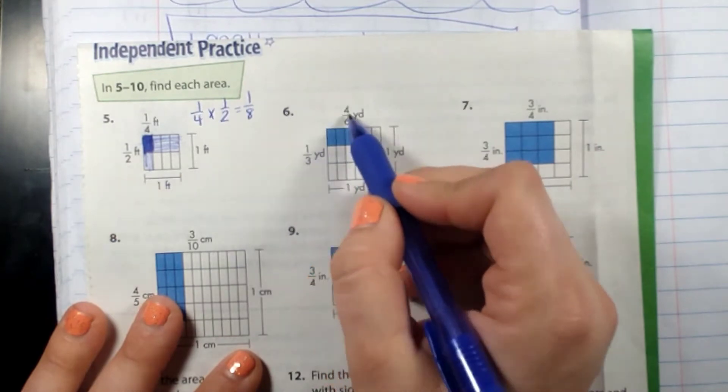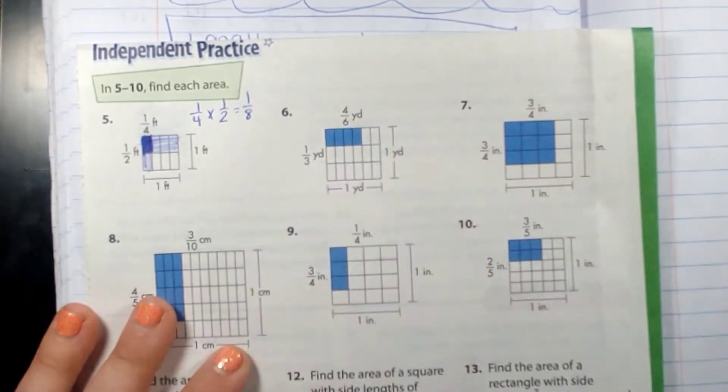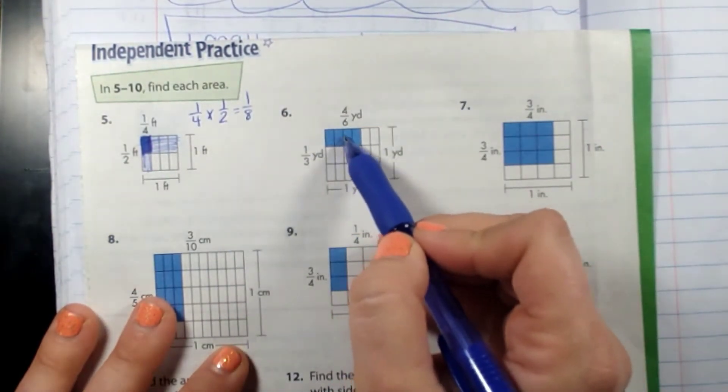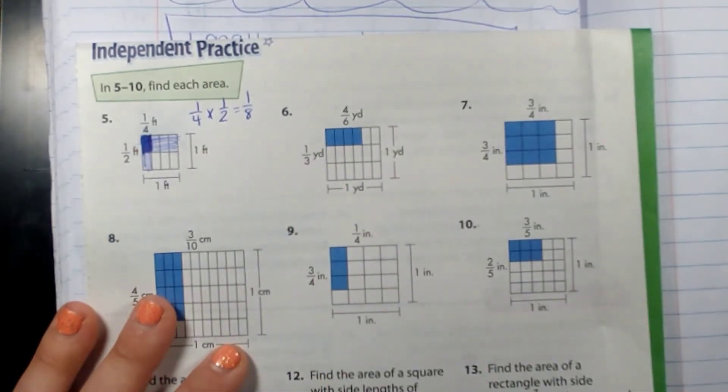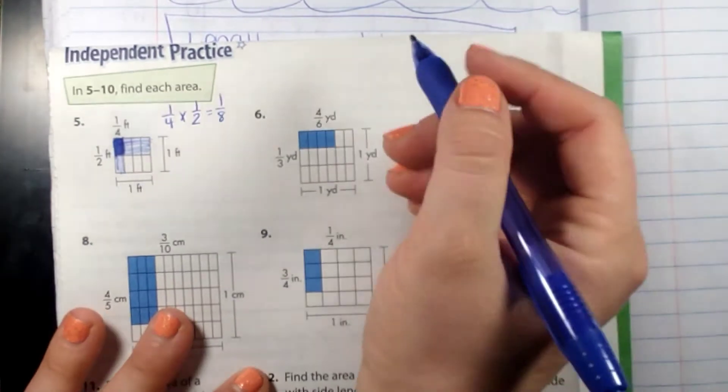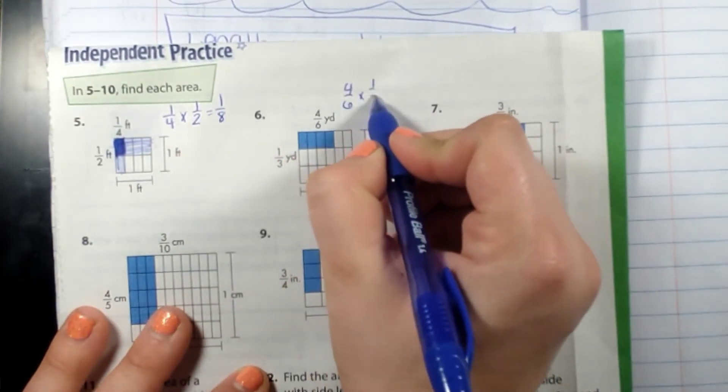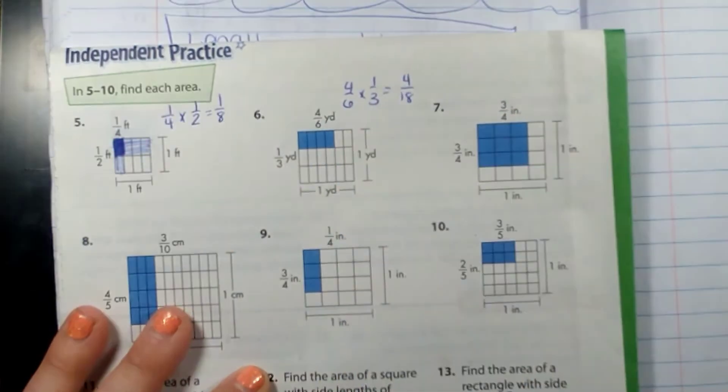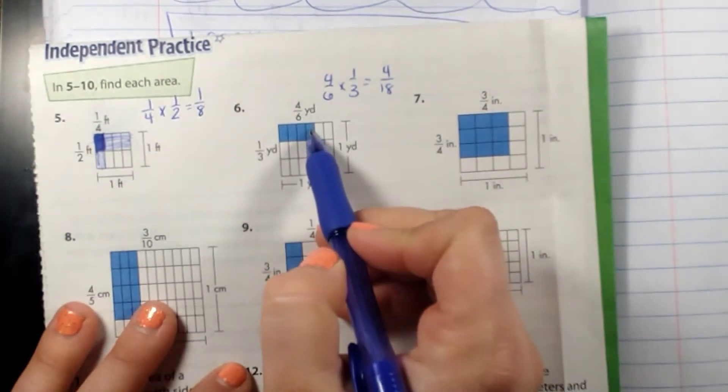I would have one third yard times four sixths yards equals one, two, three, four, and then we have eight, there should be eighteenths—so four eighteenths, because there's four and there's out of eighteen. So if I was to solve six, I would do four sixths times one third, and that would be four eighteenths. See, four eighteenths—four out of the eighteen is shaded.